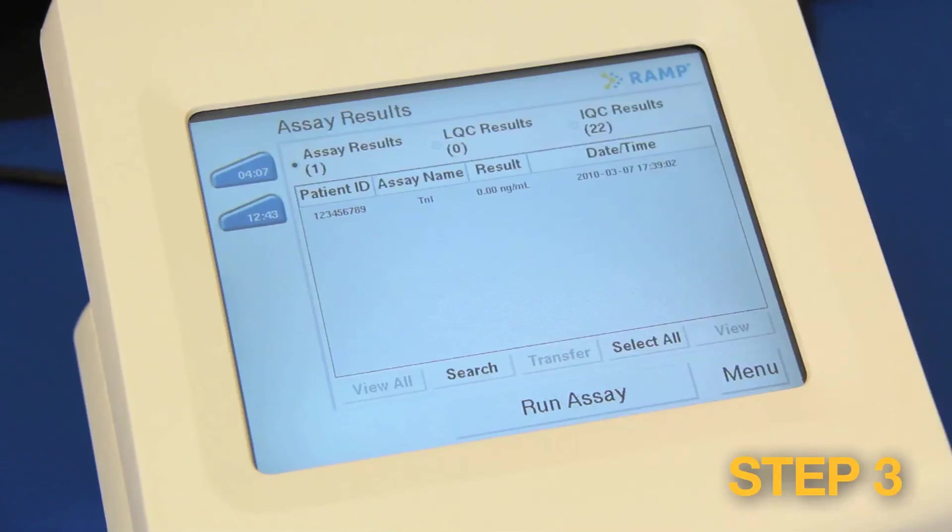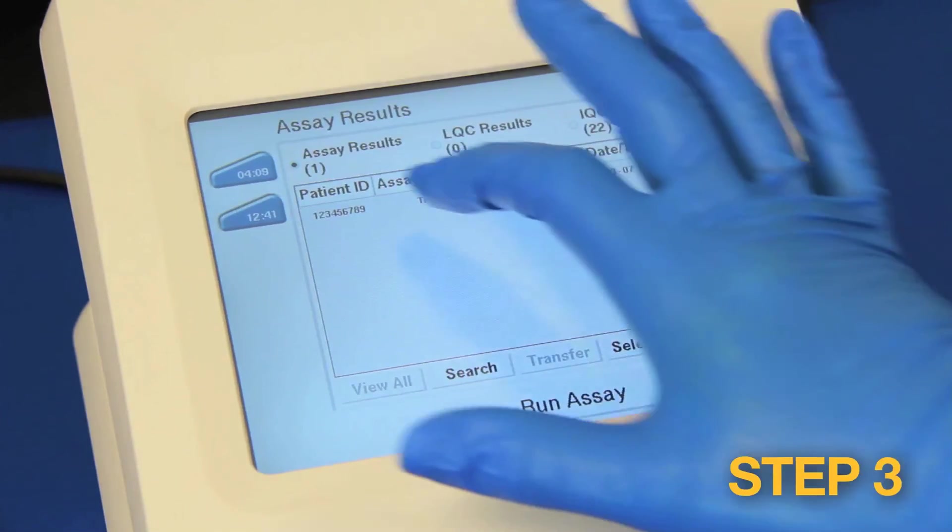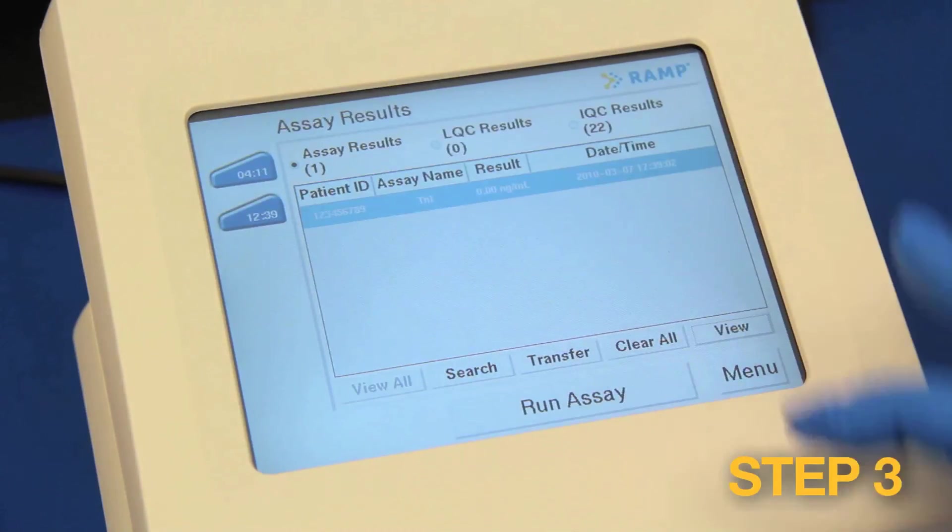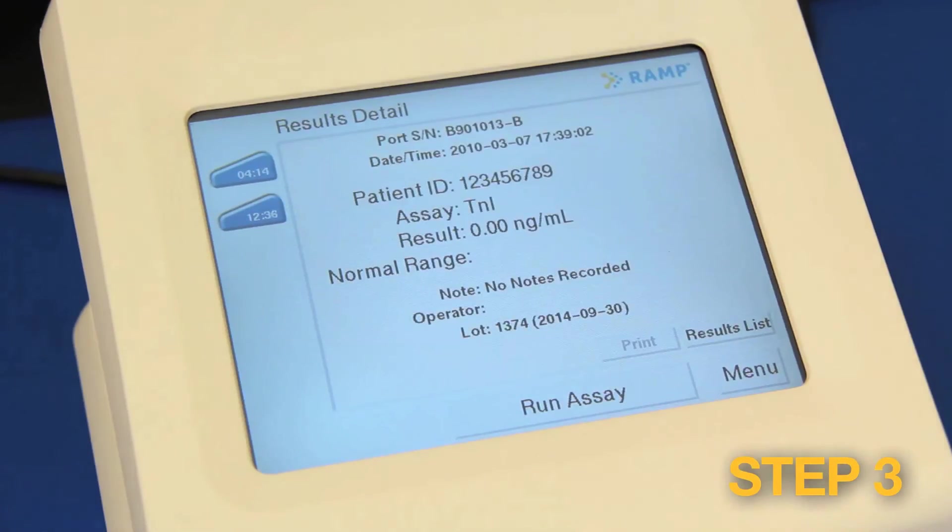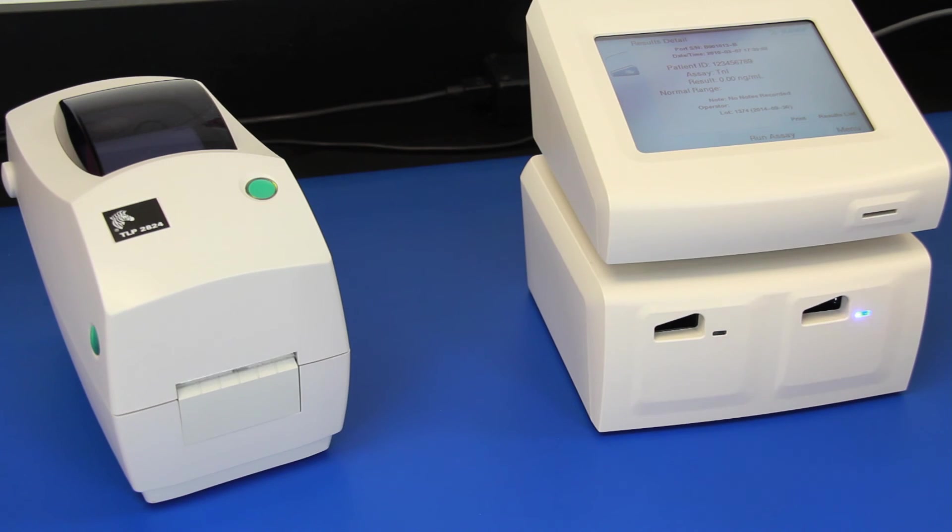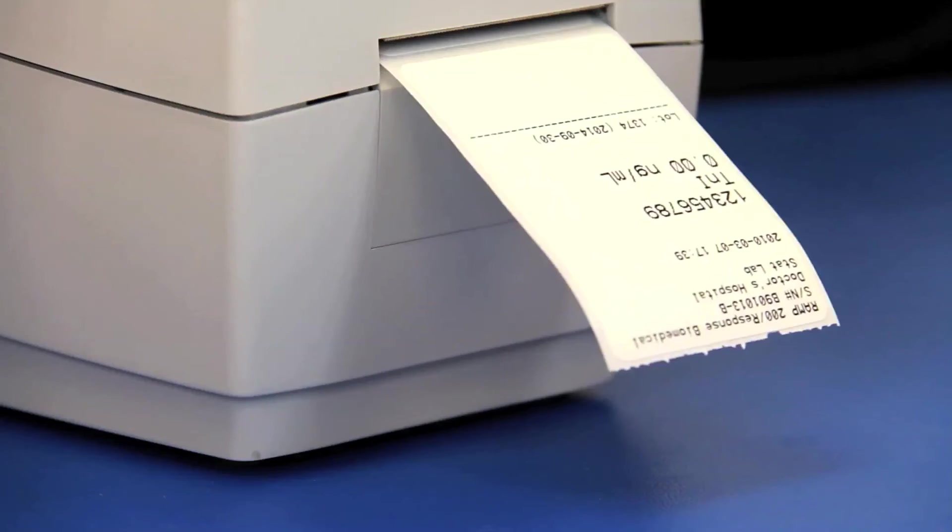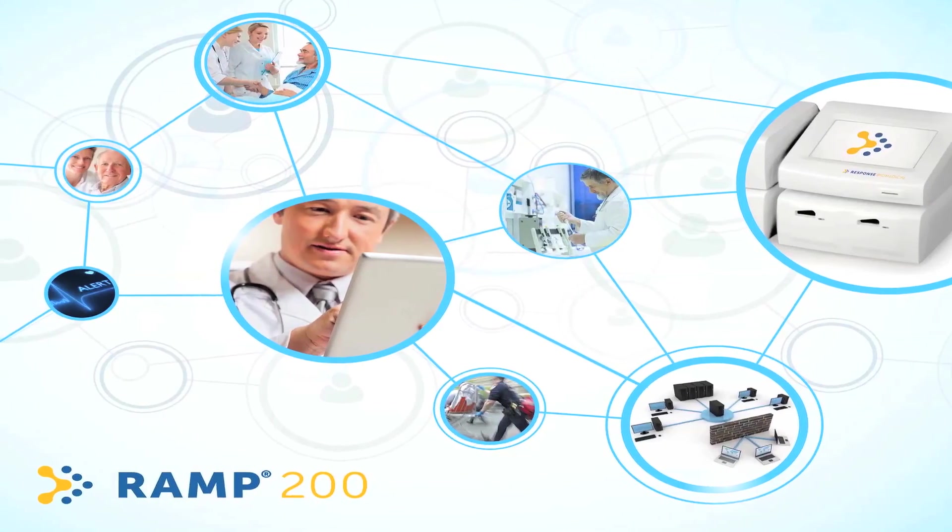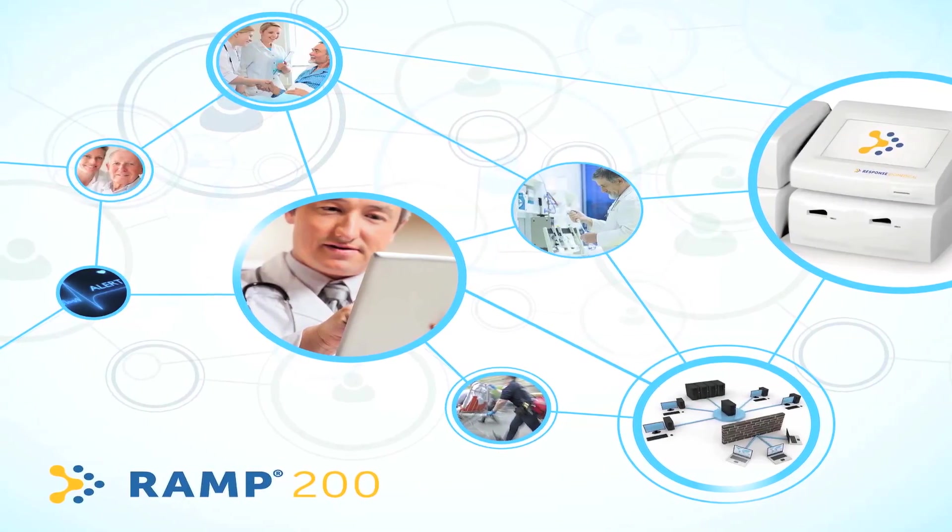The reader converts the RAMP ratio into a numerical result that is displayed on the screen and stored in memory. The RAMP 200 can store up to 900 total results, and results may be printed automatically onto labels for easy charting, exported to a USB key, or uploaded to the laboratory information system in a networked environment.